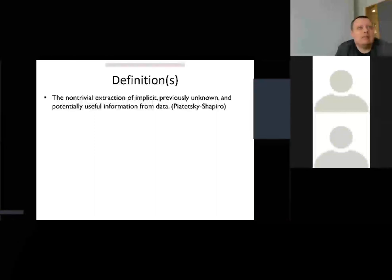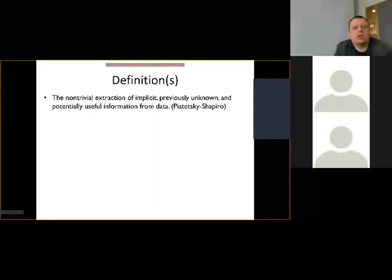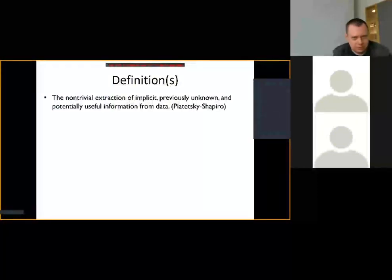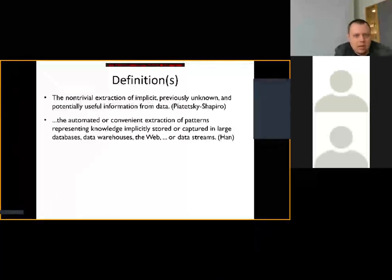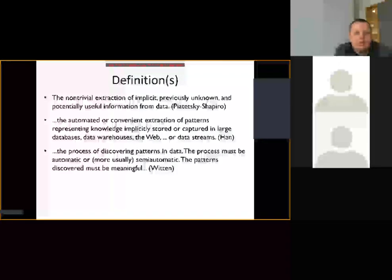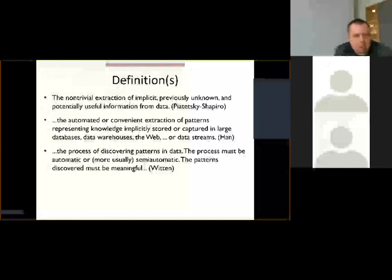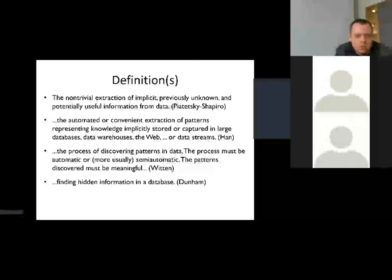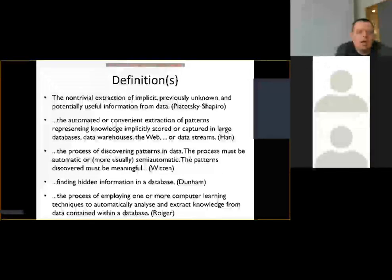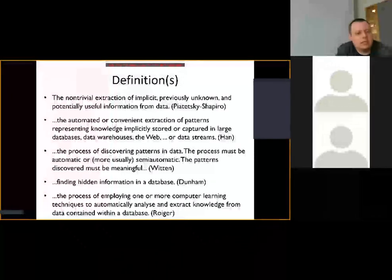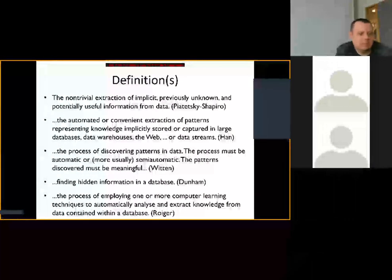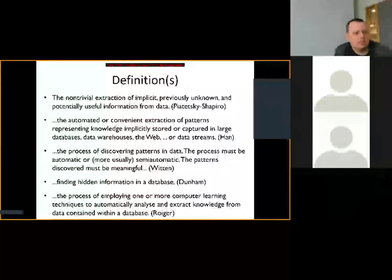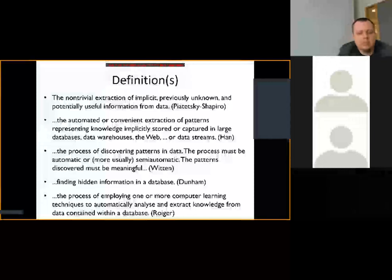Scientific definitions of data mining include: 'non-trivial extraction of implicit, previously unknown, potentially useful information from data'; 'automated extraction of patterns representing knowledge'; and 'discovering patterns automatically or semi-automatically that must be meaningful.' All of these definitions share a common idea — finding something hidden in the data. Obvious patterns are not data mining; if a pattern isn't in the data you can't find it; it must be something hidden and non-obvious.